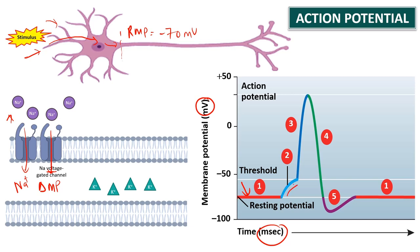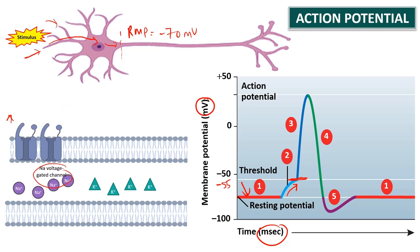The membrane potential now moves away from the RMP toward a less negative value. As more and more sodium enters the cell, the membrane reaches the threshold level. Once the membrane potential reaches the threshold level of approximately minus 55 millivolts, all of the sodium voltage-gated channels open and cause sodium to rush into the cell. This produces a sharp upward spike of the action potential, as seen on the blue line.